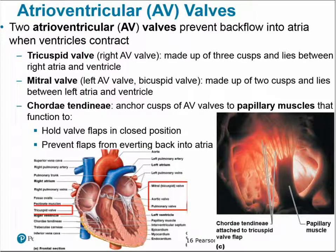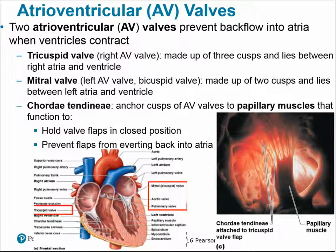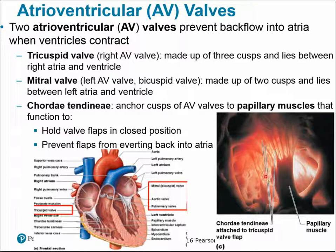The two AV valves function to prevent backflow into the atria when the ventricles contract. The tricuspid valve on the right side of the heart is made up of three cusps and lies between the right atrium and right ventricle. The mitral valve — sometimes called the bicuspid — has two cusps and lies between the left atrium and ventricle. The chordae tendineae anchor the cusps of the valves to the papillary muscles, keeping the valves in place and preventing them from everting into the atria.